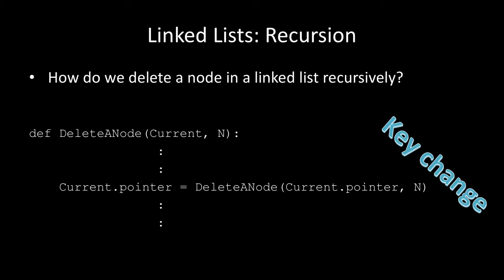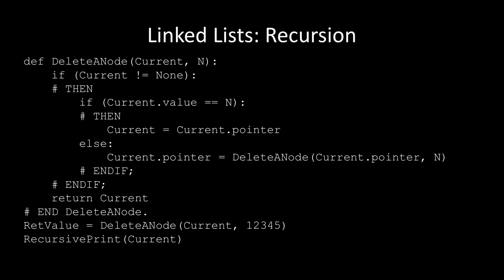To delete a node recursively, we declare a method called delete_node that takes in two values: the current pointer and the value we want to delete. At some stage, current.pointer gets assigned delete_node(current.pointer, n). The code simply checks: if current is pointing to nothing, and if the current value is n, simply change the current pointer to point to the next value on the list. Otherwise, keep recursively doing this until we've found the node we want. When we've found it, that node gets deleted and we exit.